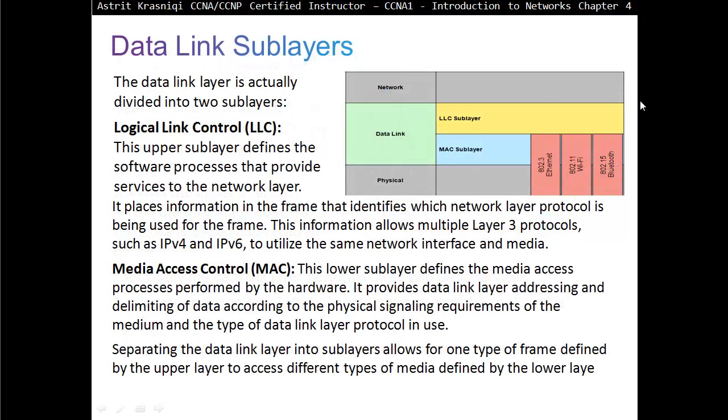The Data Link Layer is divided into two sublayers. Remember the OSI layers? Layer 7 Application, 6 Presentation, 5 Session, 4 Transport, 3 Network, 2 Data Link Layer. Now you need to know two more layers because we have sublayers: Logical Link Control and Media Access Control.